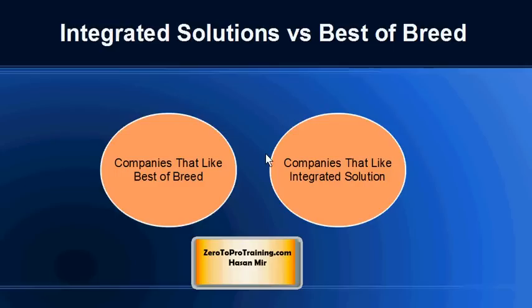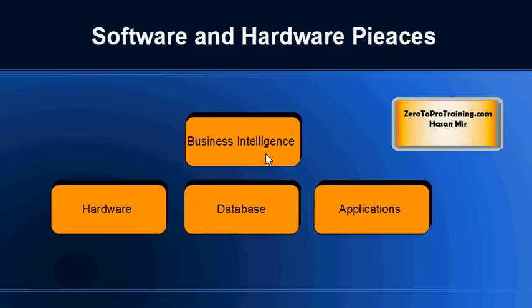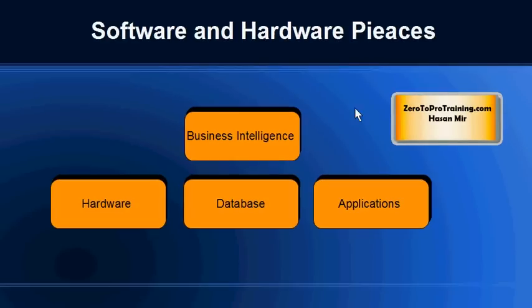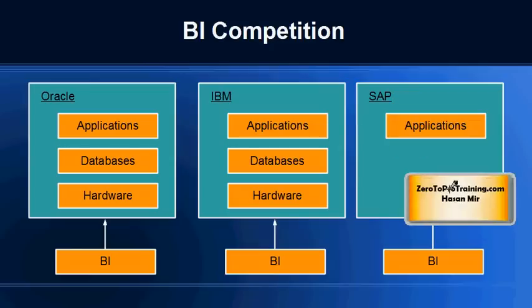Keep in mind there are two cultures for companies. One culture prefers best-of-breed products, and another prefers integrated solutions. In the best-of-breed scenario, a company would purchase hardware from one vendor, a database from another vendor, and applications and business intelligence tools from a different vendor — going after the best product from different vendors. In the integrated solution culture, they go for all these products from one vendor. This is what IBM, SAP, and Oracle targeted — they purchased business intelligence products to rebrand and offer an integrated solution.